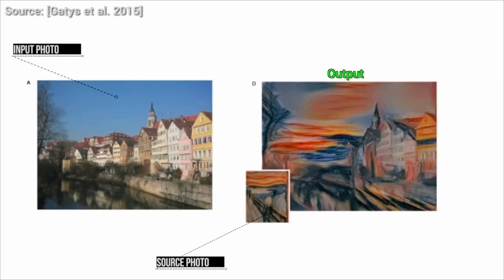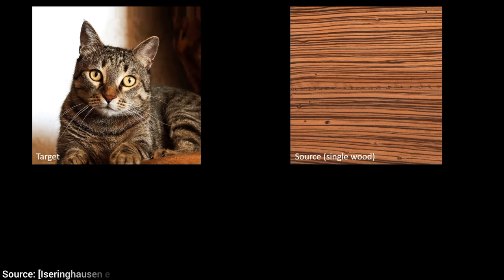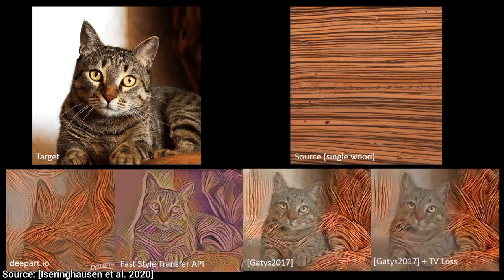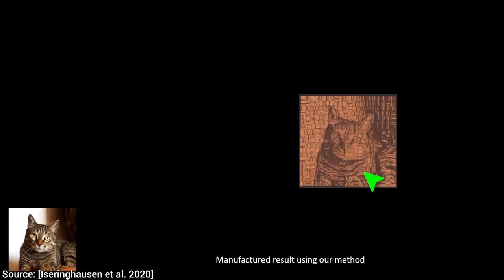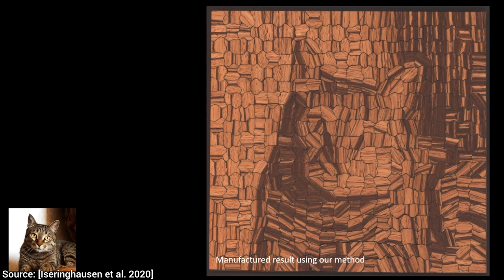The cool thing is that the style can be a different photo, a famous painting, or even wooden patterns. Feast your eyes on these majestic images of this cat reimagined with wooden parquetry with these previous methods. And now, look at the result of this new technique that looks way nicer. Everything is in order here, except one thing.